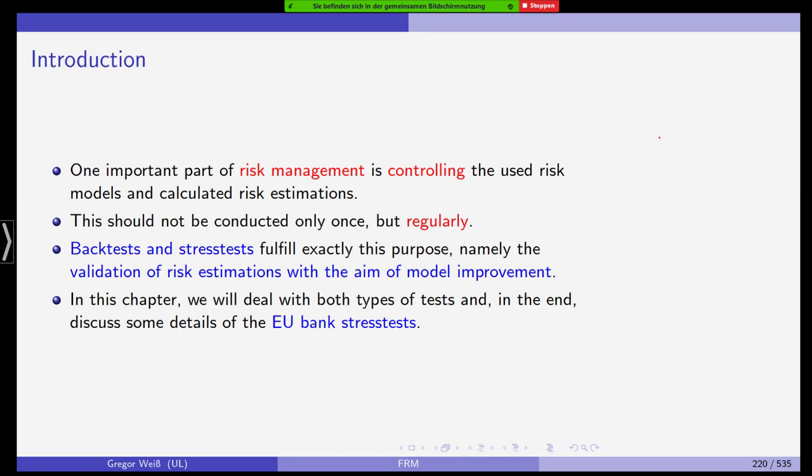Again, the reminder why we need this. We are using risk models that are trying to show reality with a limited amount of information. This always leads to the danger that we're missing out on something, that our risk models are not adequate and that we've chosen the wrong models. This leads us to model risk.